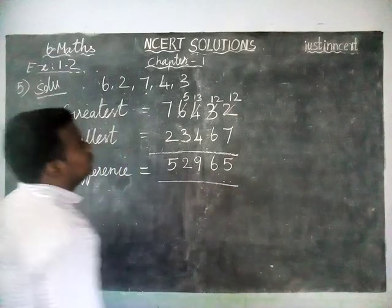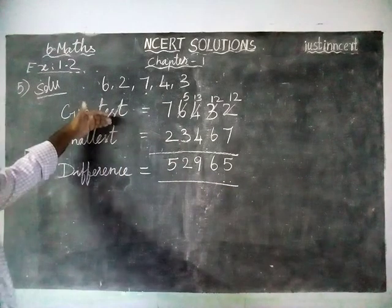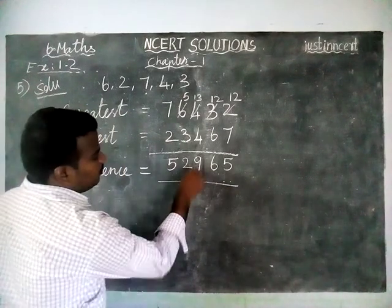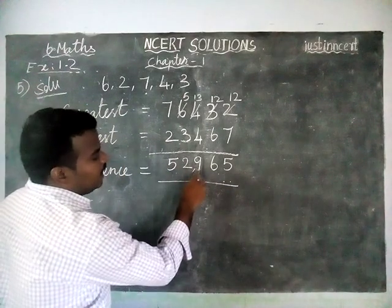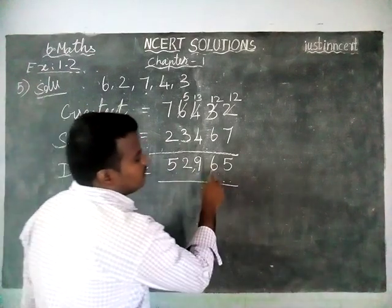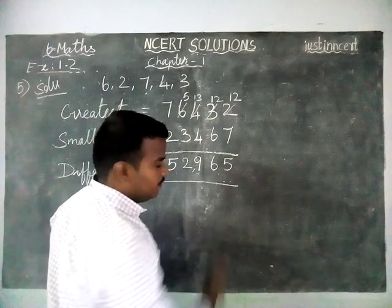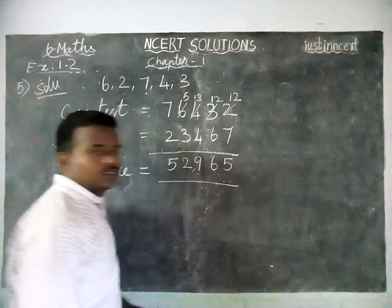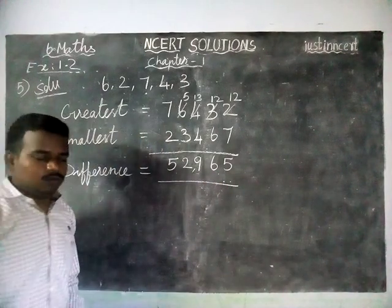So the difference between the greatest number and the smallest number is 52,965. That's all, students. Thank you.